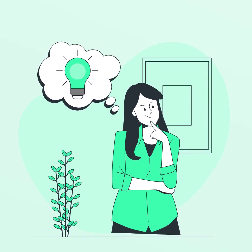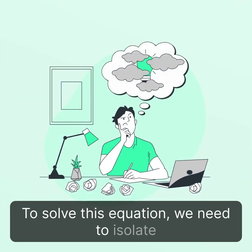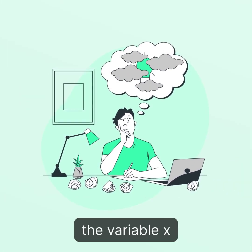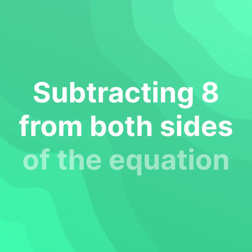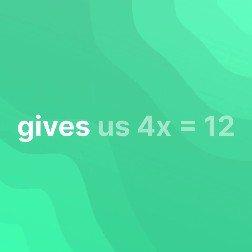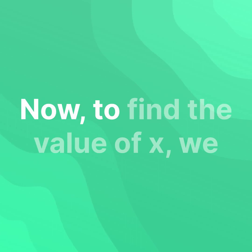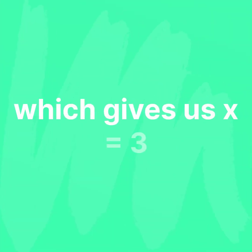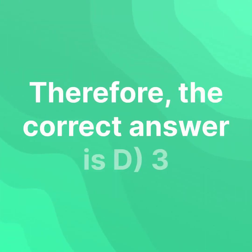To solve this equation, we need to isolate the variable X. Subtracting 8 from both sides of the equation gives us 4X equals 12. Now, to find the value of X, we divide both sides by 4, which gives us X equals 3. Therefore, the correct answer is D. Three.